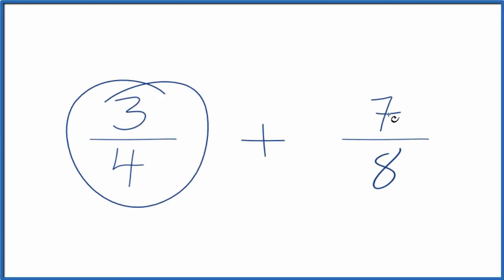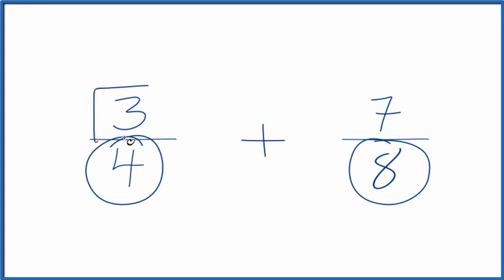Let's add the fractions three-fourths plus seven-eighths. And here's how we'll do it. When we're adding fractions, we want the denominators to be the same. Then we can just add the numerators, and we'll have found the sum for three-fourths plus seven-eighths.